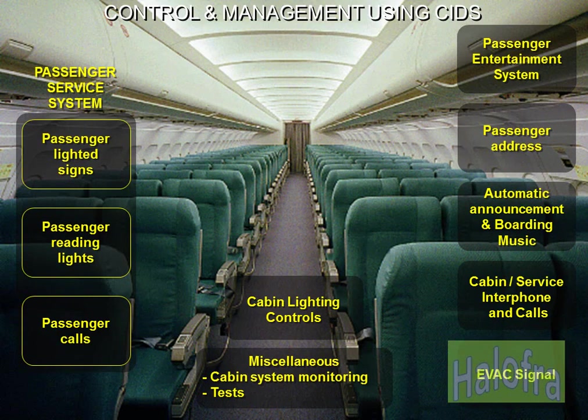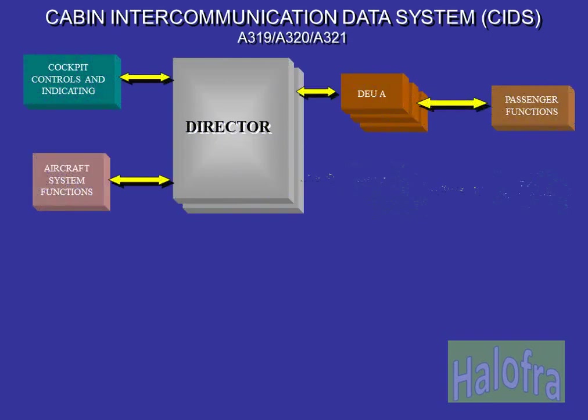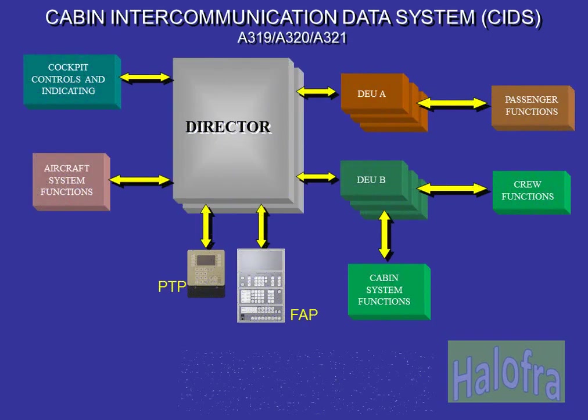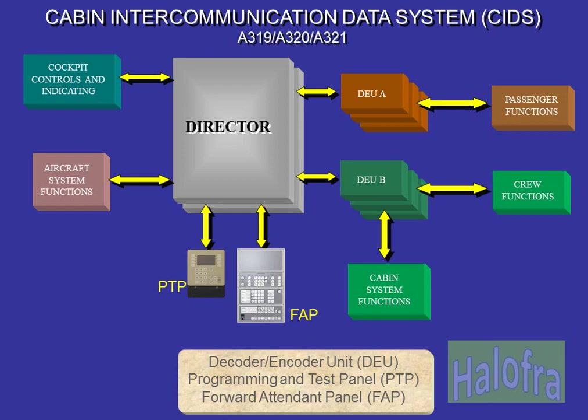The CIDS allows control and management of all the cabin systems. Various cabin systems are controlled, tested and monitored by the cabin intercommunication data system, CIDS. The CIDS is composed of two directors, one in active mode and one in hot standby.